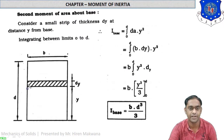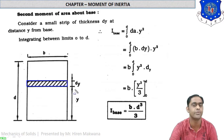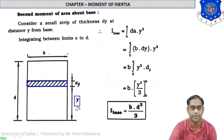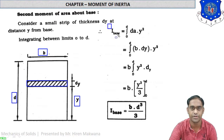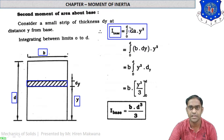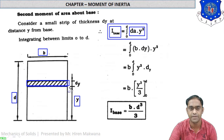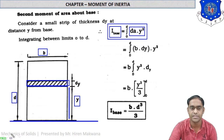In this figure we again take the horizontal rectangular strip with area b times dy, at a distance y from the bottom. Remember, this distance y is from the bottom axis, not from the centroid — unlike the previous case. The depth of the rectangle is d and the width is b. We need to find the moment of inertia about the base. Since the distance is measured from the bottom, the integration limit goes from 0 to d.